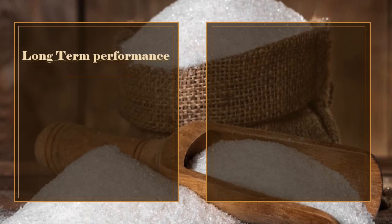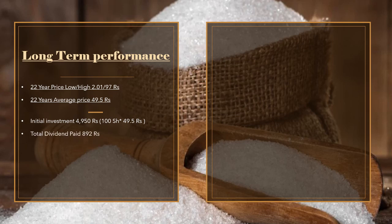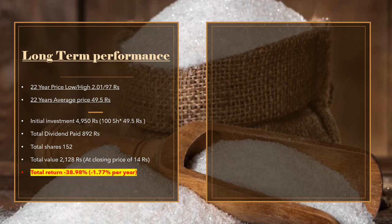Agar ham company ke long term performance ki taraf dekhe to paanch saal ke arse mein company ka share price low 2.01 rupees aur share price high 97 rupees per share raha hai. Average share price is arse mein 49.50 rupees per share. Is average share price per 100 shares mein initial investment 4,950 rupees cost ki hai. Total cash revenue — company ne shareholders ko is arse mein 892 rupees pay ki hai — aur total number of shares 152 ho gayi hai. Last day closing price 14 rupees per share per current investment value 2,128 rupees hai. Overall in sarse mein 38.98 percent ka loss hai aur year on year 1.77 percent ka negative return hai shareholders ke liye unki initial investment per.